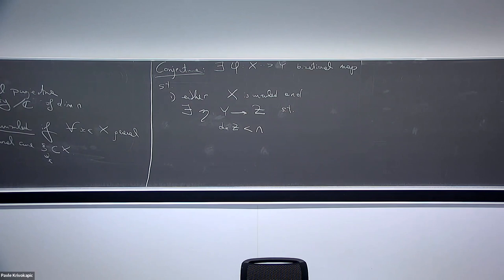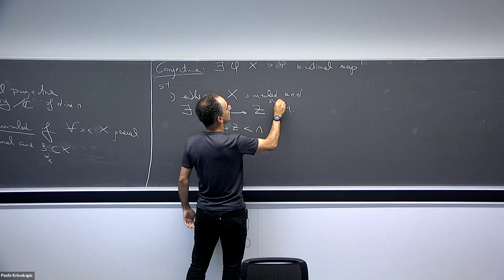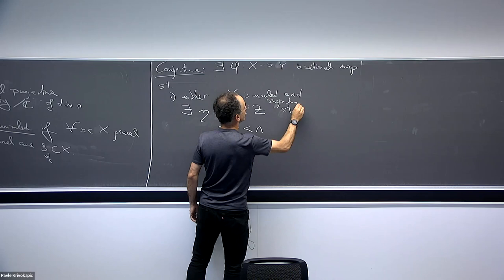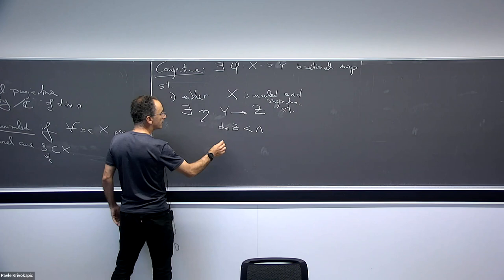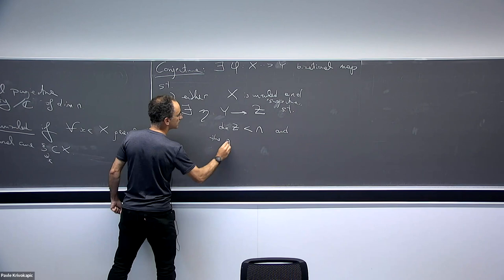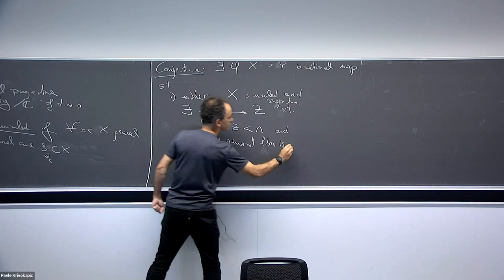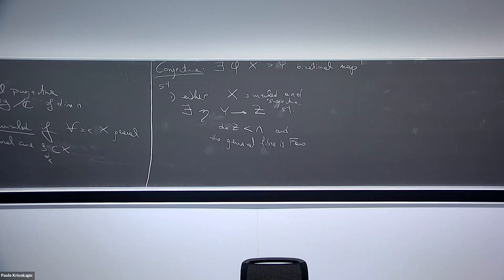In other words, it is not a birational morphism — it is always contracting the general fiber — and the most important part is that the canonical divisor of this fiber, which could be singular, is anti-ample.